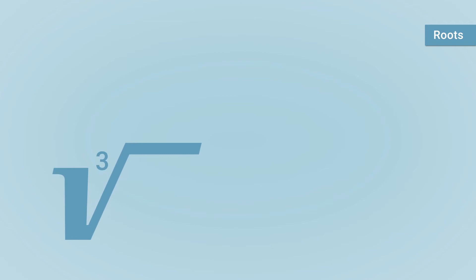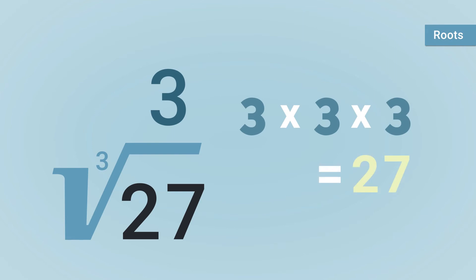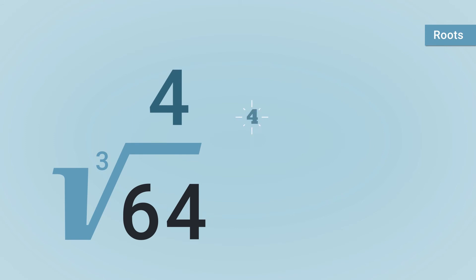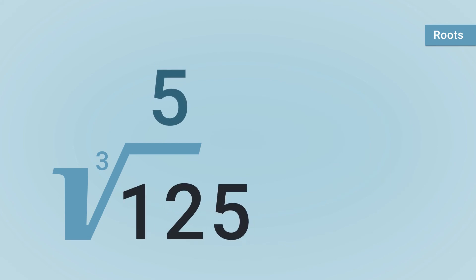Equally, the cube root of 27 is 3, because 3 times 3 times 3 equals 27. The cube root of 64 is 4, because 4 times 4 times 4 equals 64. And the cube root of 125 is 5, because 5 times 5 times 5 equals 125.